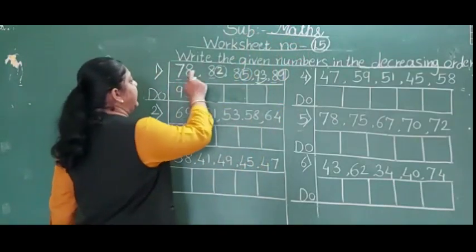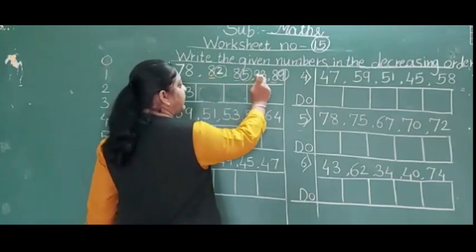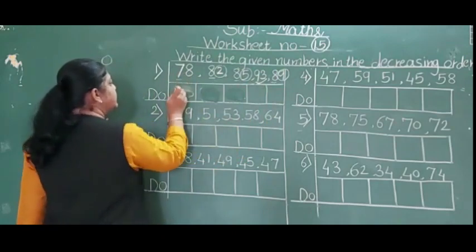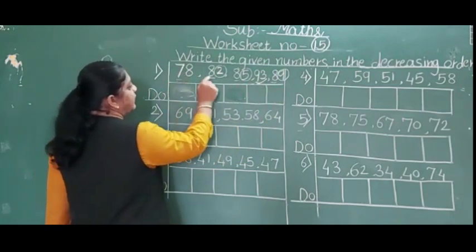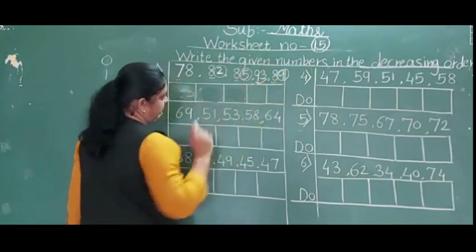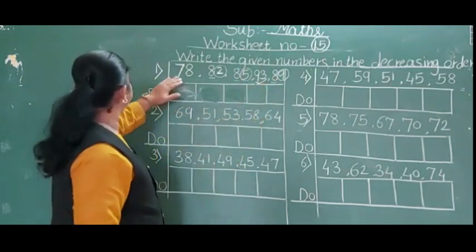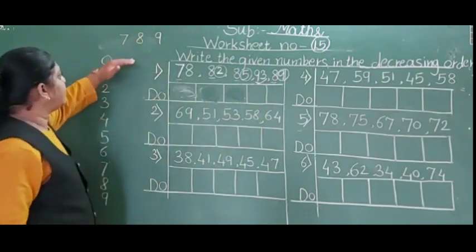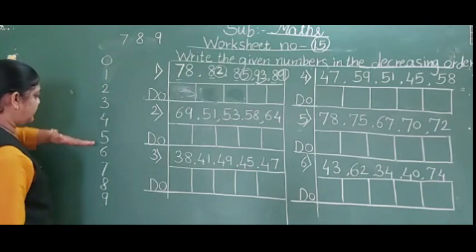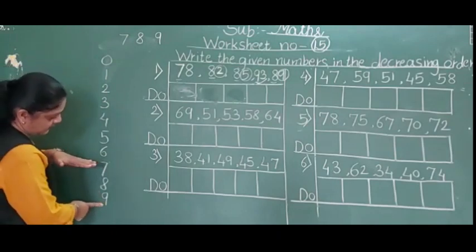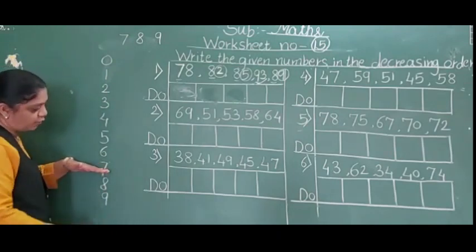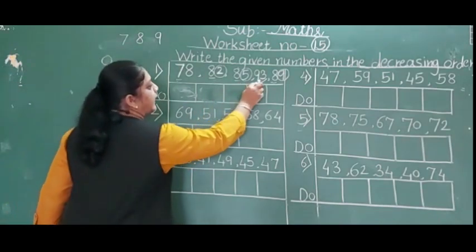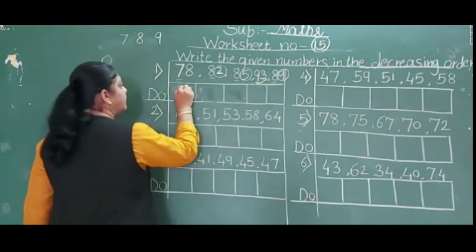First descending example: 78, 82, 85, 93 or 89. First digits: 7, 8, 8, 9, 8. We have 7, 8 and 9. Which is the biggest? 7 is above and 9 is below. Below numbers are always big, so 9 comes first. So 93 comes first.